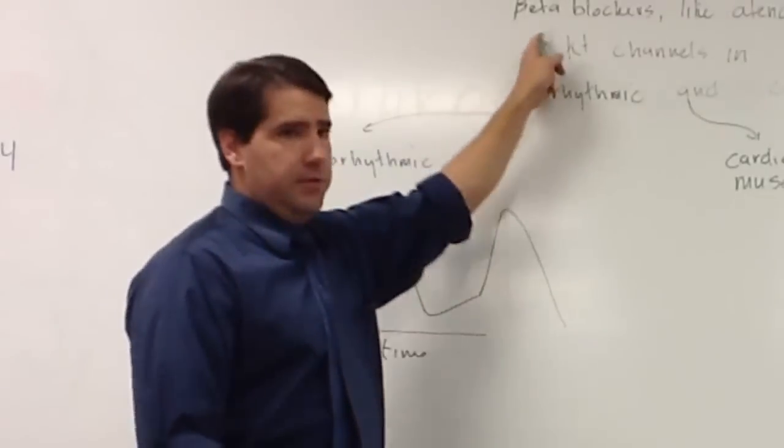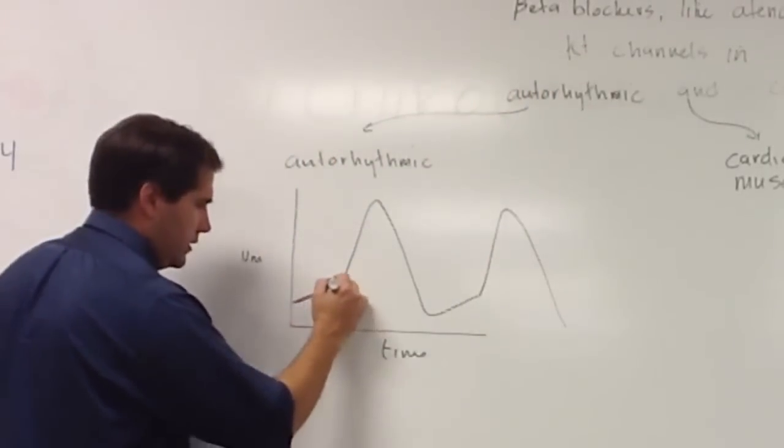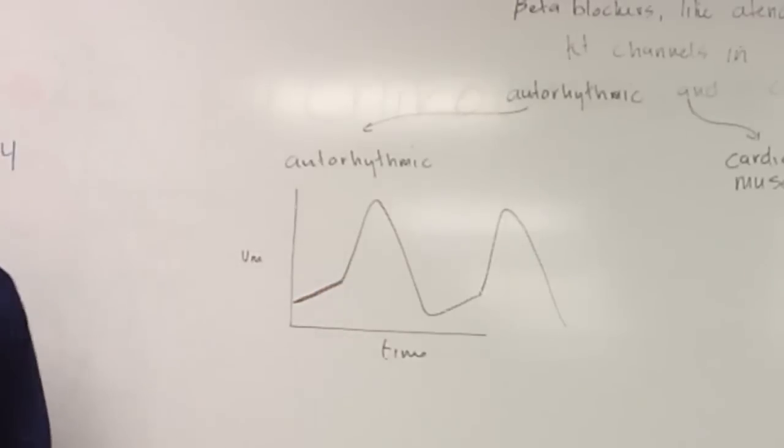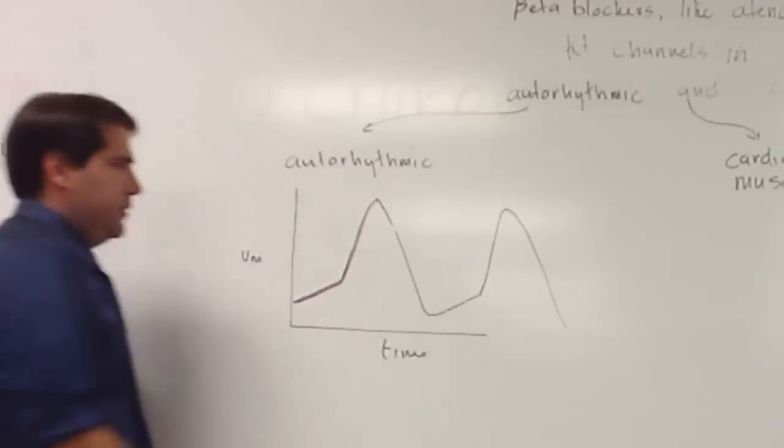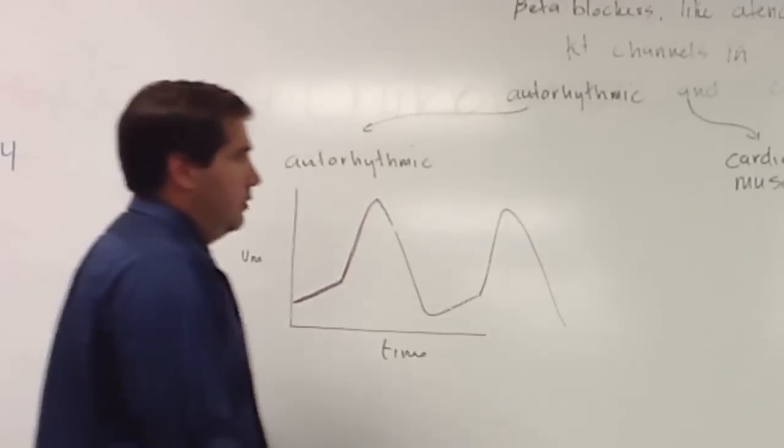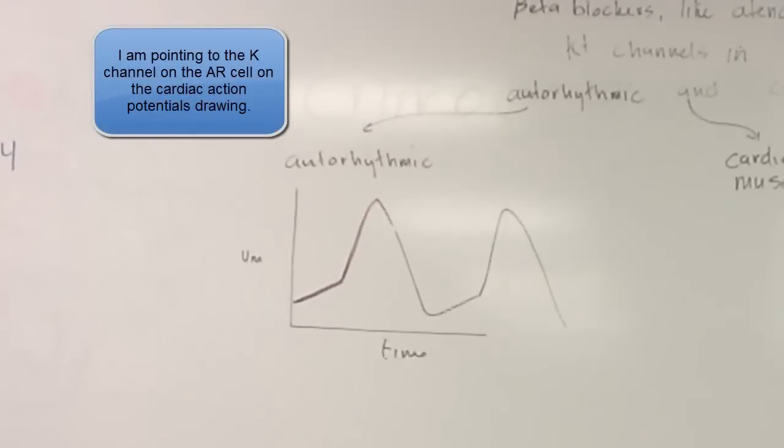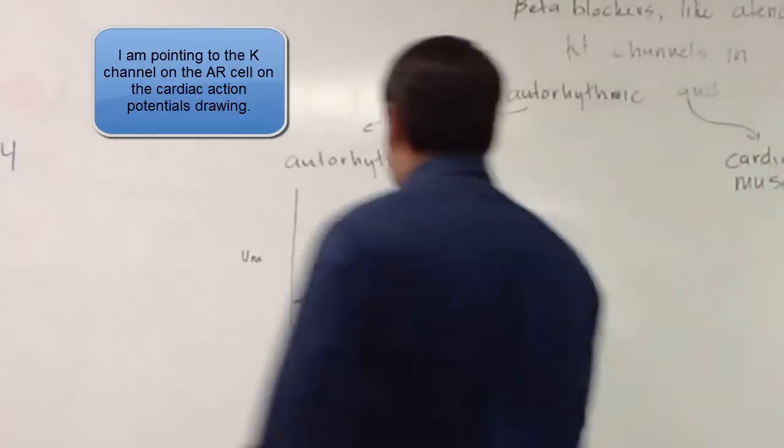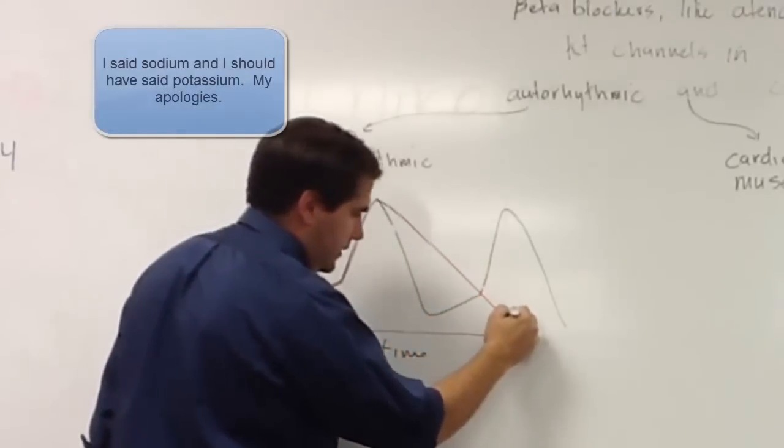Now since we're blocking a potassium channel, this is not going to be changed because that's sodium leak. This is not going to be changed because that's the calcium channel. We're affecting the potassium channel. But if we block the potassium channel, this potassium will not be able to leave as quickly. So the voltage will not go back down as fast. So sodium will take longer to get out of the cell.